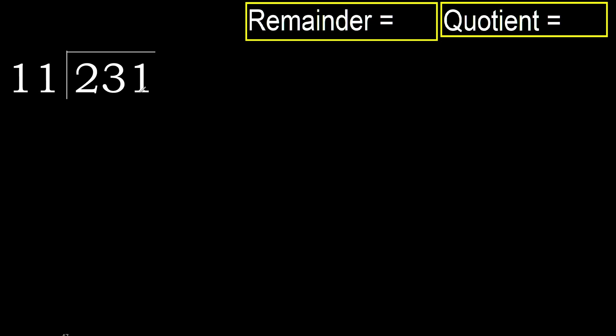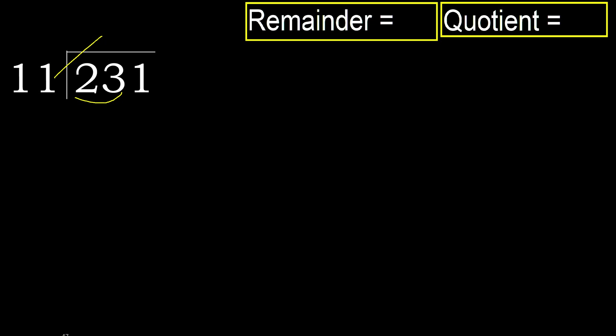231 divided by 11. 2 is less, therefore next. 23 is not less, therefore with 23 and 11, multiply by which number is nearest to 23.